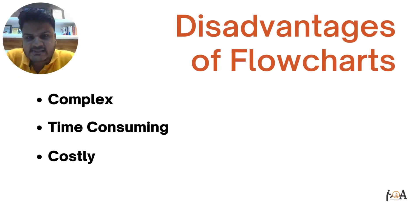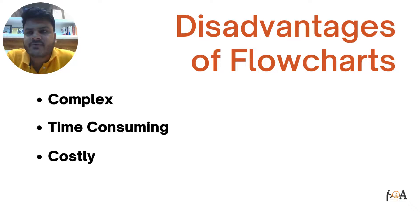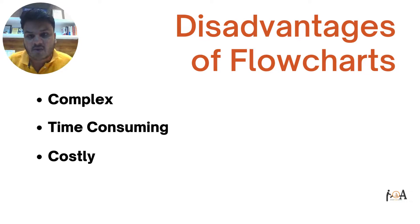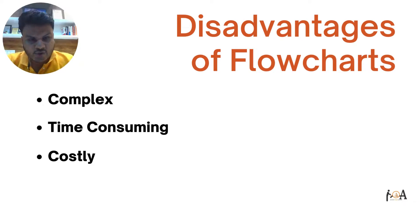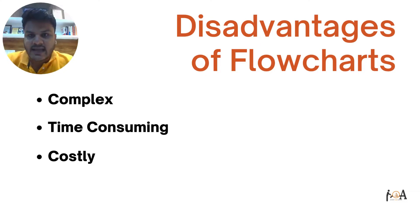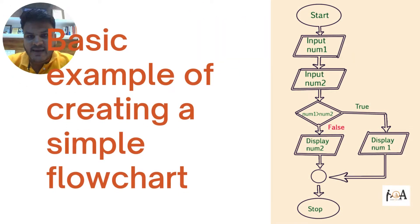After discussing advantages, let's discuss the disadvantages of flowchart. Flowcharts can be very complex, and if a complex algorithm is involved, it will become time-consuming as well as costly. It also makes software processes slow — meaning software process speed will become low if we rely on flowcharts. However, we should focus on the advantages, because at a real level of learning algorithms, flowcharts are very important as they give us clarity about the program and the goal.